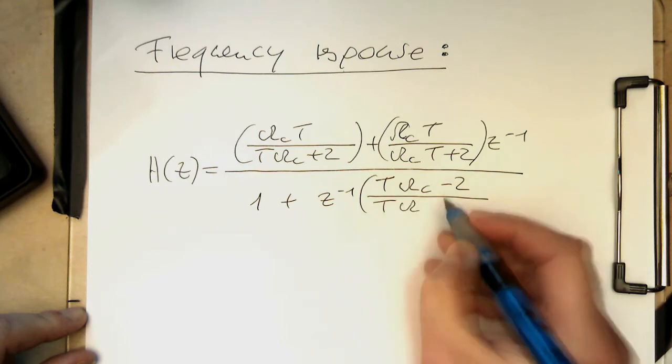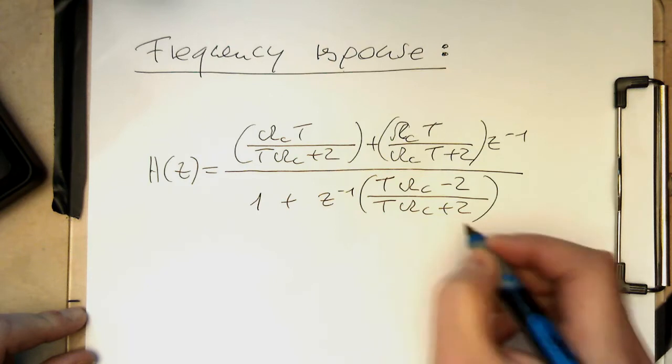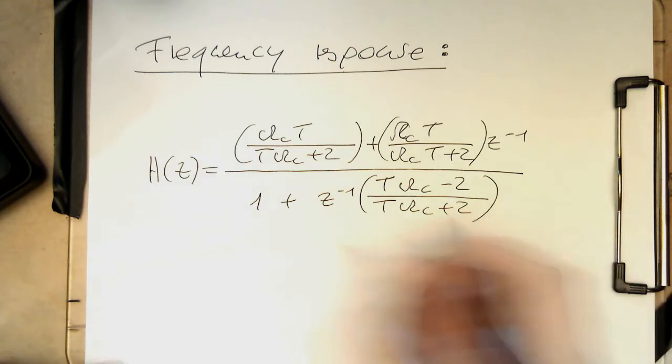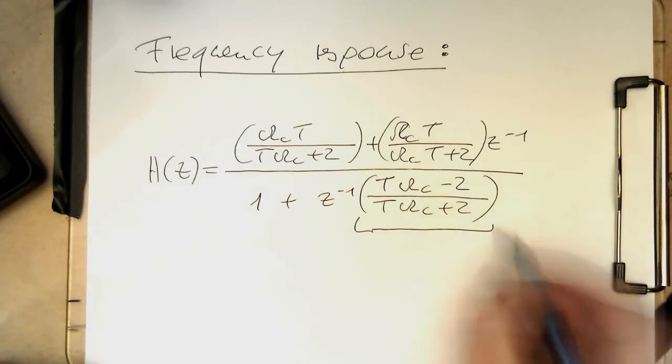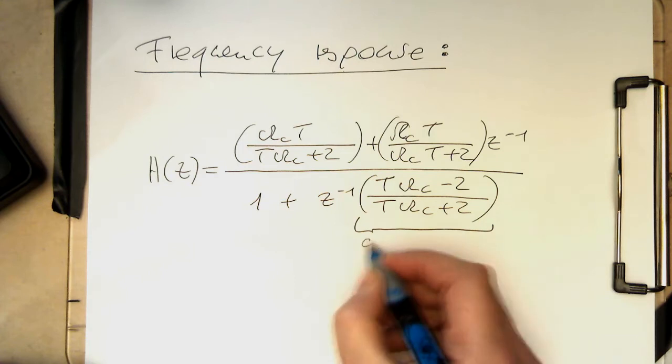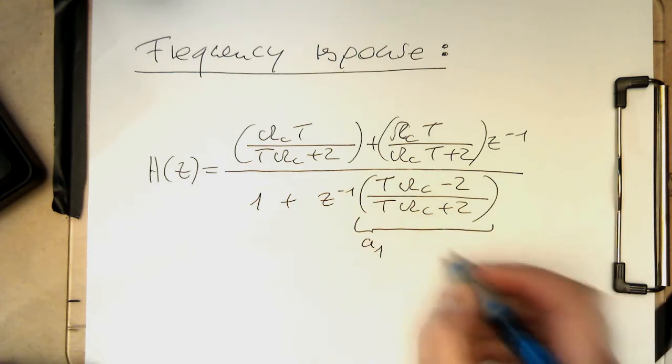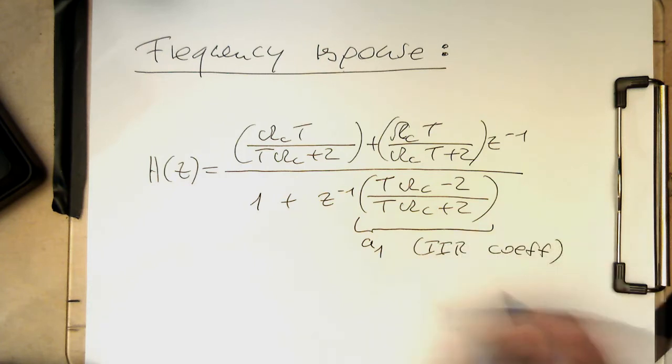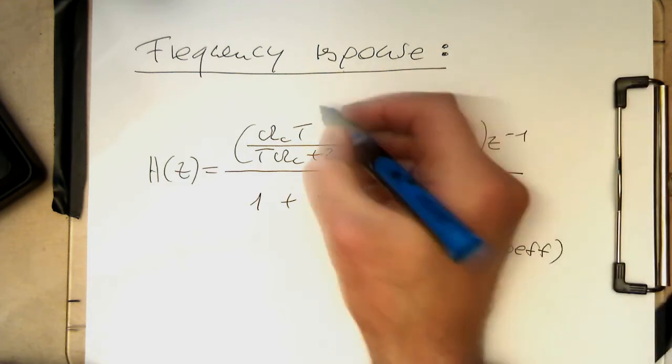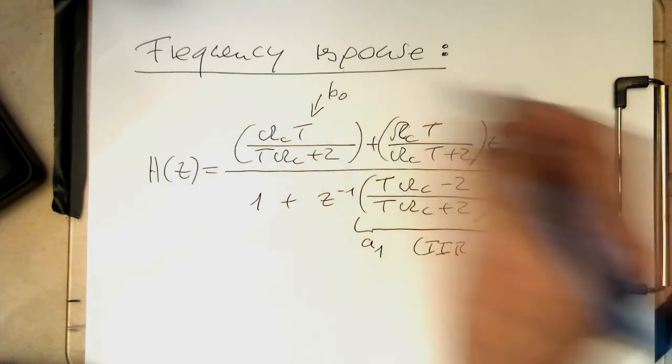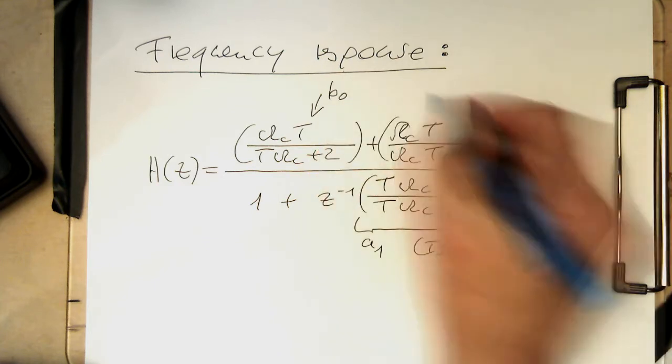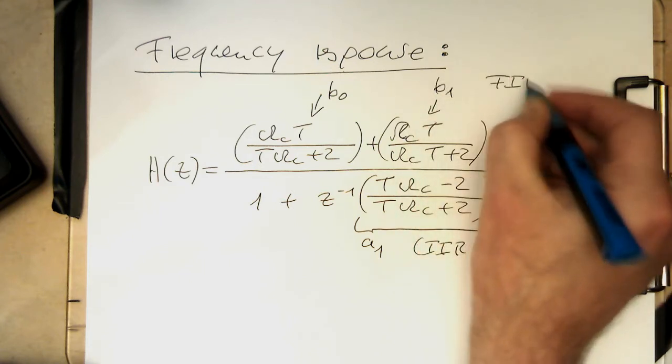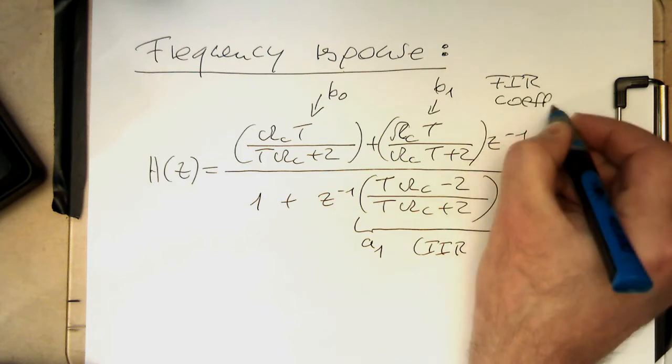So omega c plus 2. And so we see here, if we think of our filter coefficients, that's here our filter coefficient a1, the IIR coefficient here. And then here we've got our B0 FIR coefficient, and then this one is our B1 FIR coefficient.